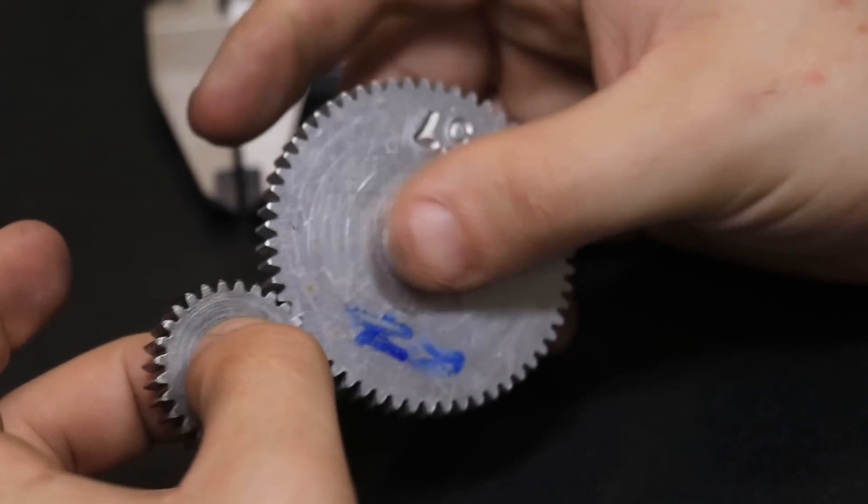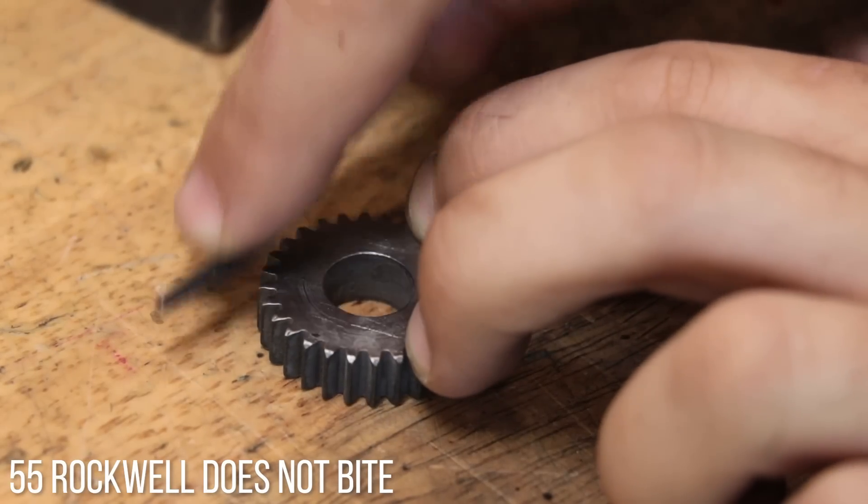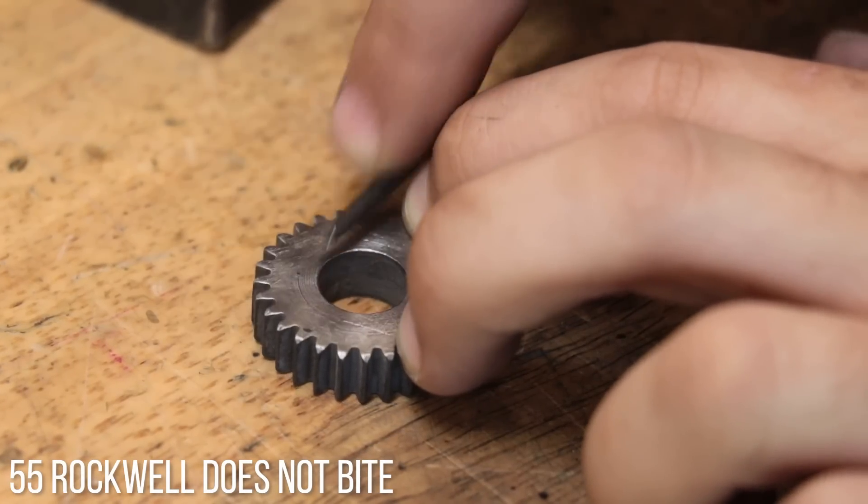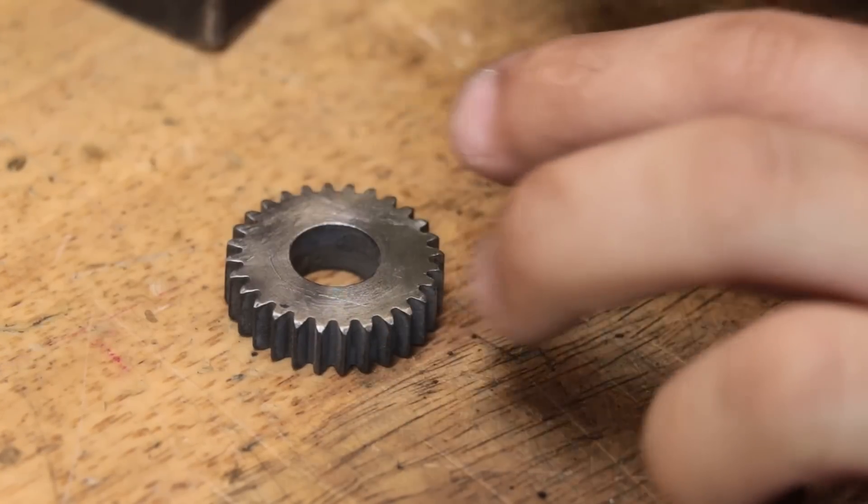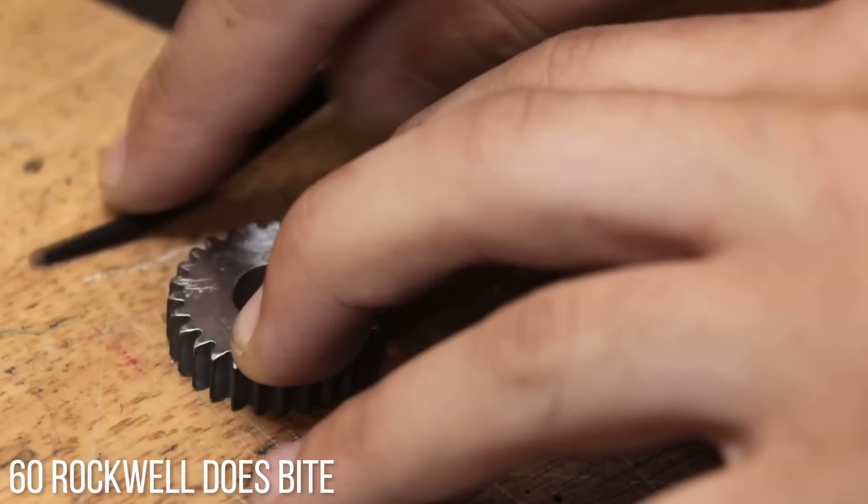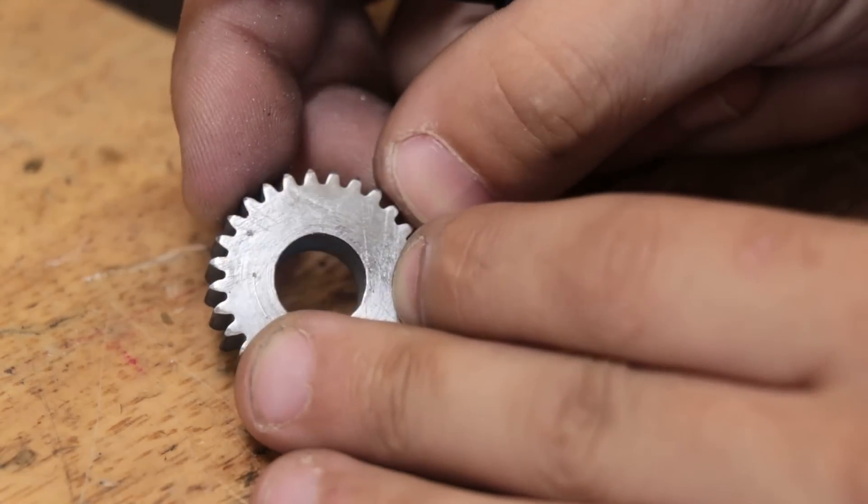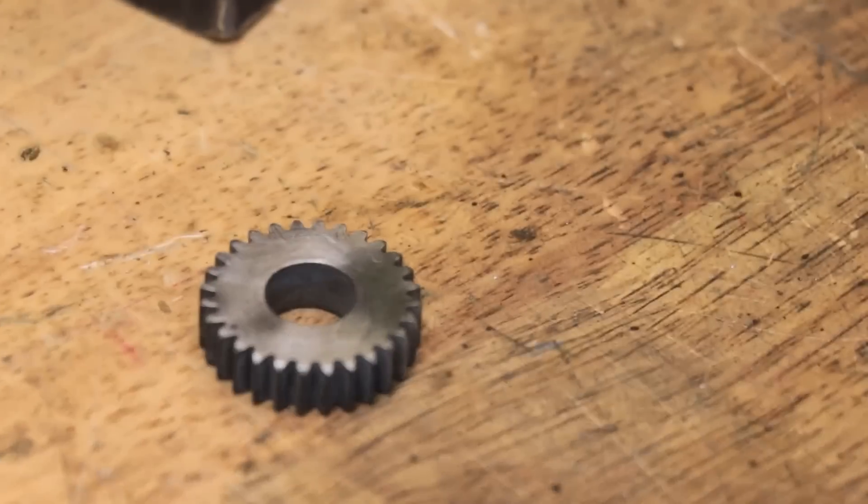And before I forget, let me quickly test the hardness. When quenching regular carbon steel in this oil, I'd expect to get around about 50 Rockwell C hardness. However, this gear seems to be closer to 60 Rockwell C hardness, so the claims about better hardenability definitely seem to be true.